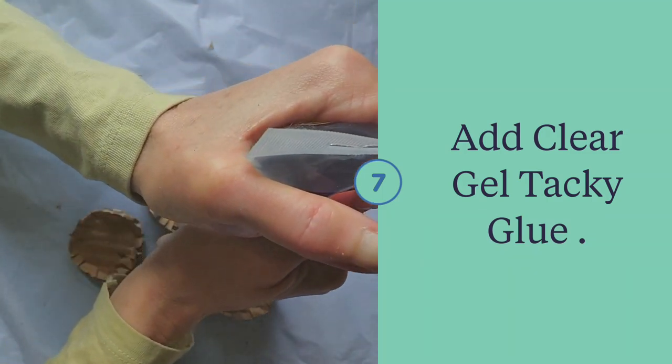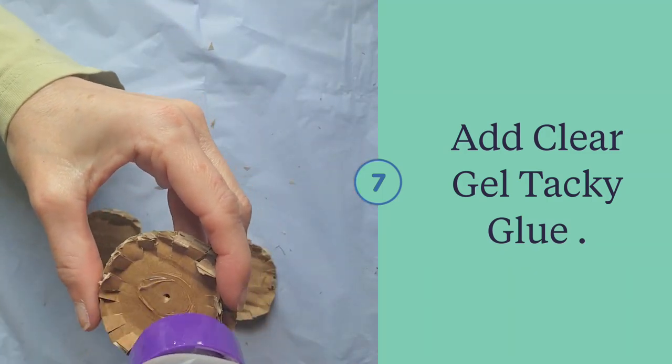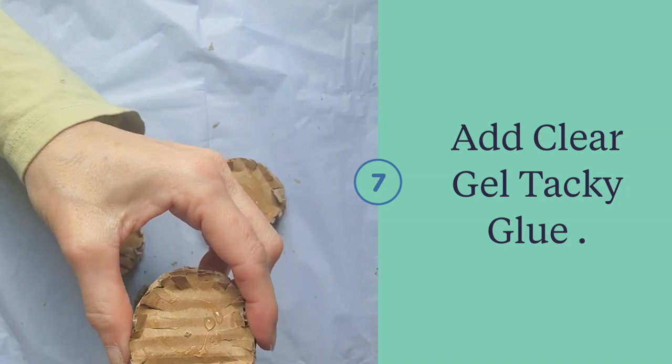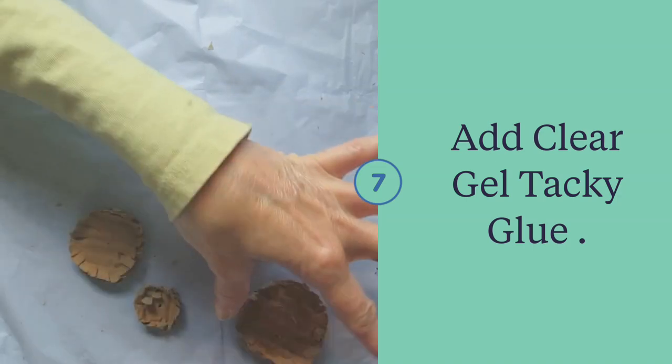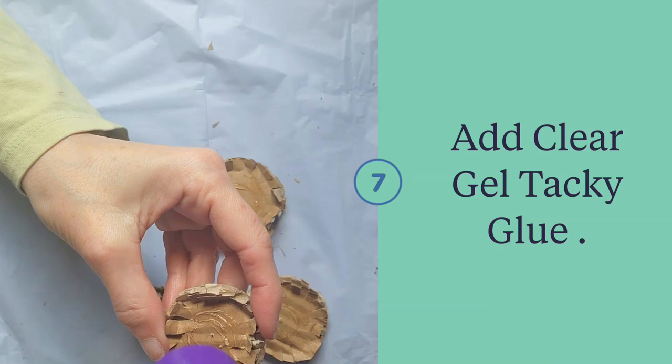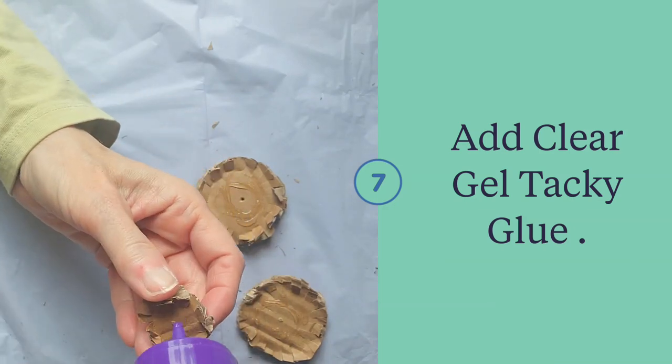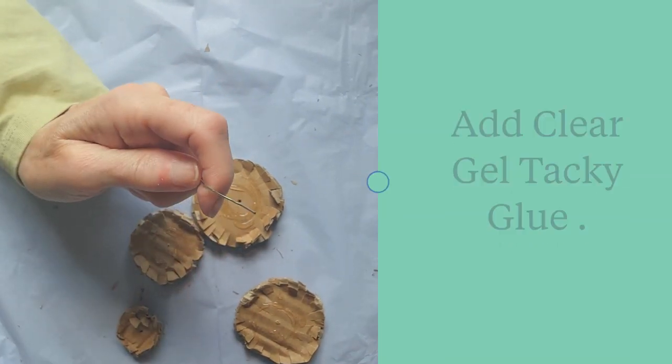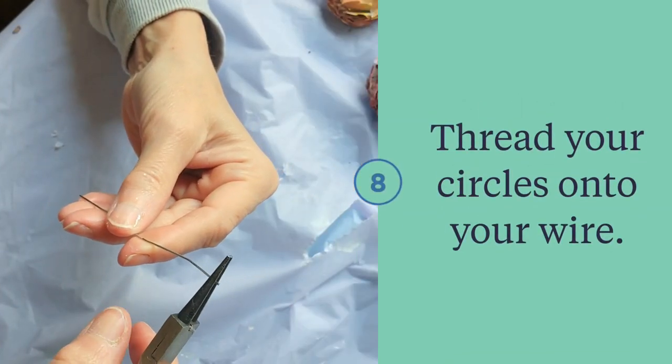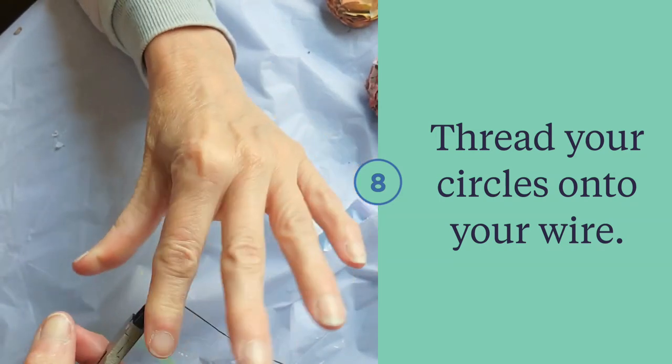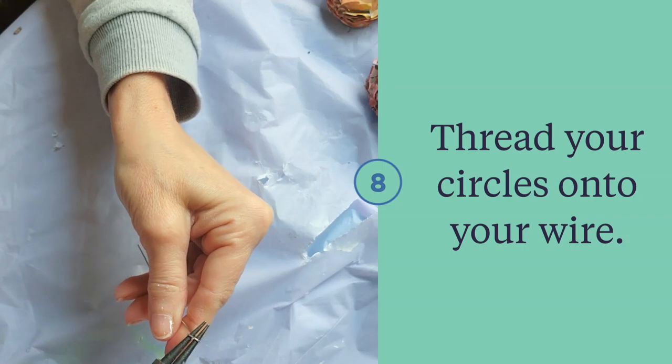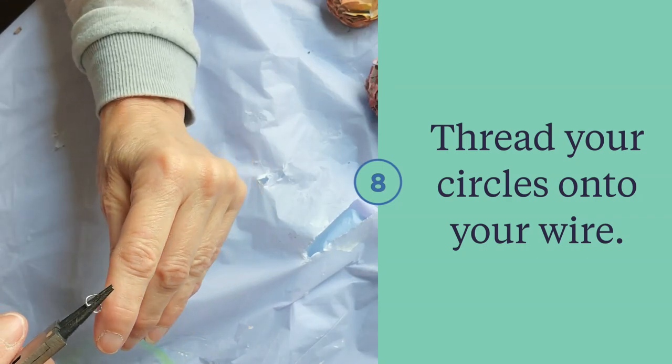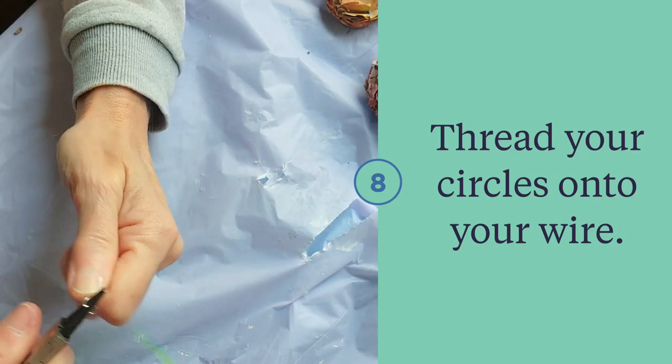Now we're putting tacky glue on the center of each one of these. Take a wire pliers and just twist that around. This will be the center of each flower, and after you have that, you can just thread all your pieces together.